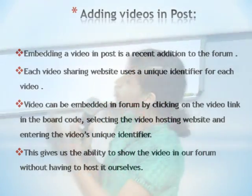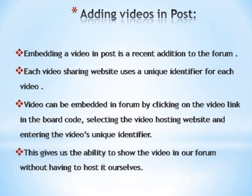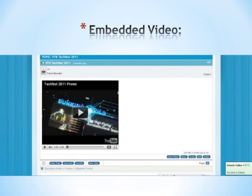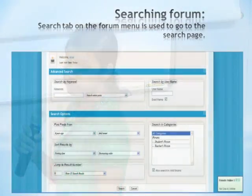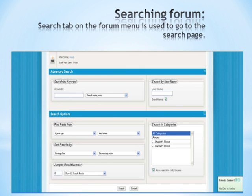We have also integrated videos and posts. You can add them without hosting it yourself — every site gives a unique identifier for each video, so you insert that identifier in the post and the video will be embedded. There is an example of an embedded YouTube video. We have also implemented search in the forum with an option of advanced search, where a student can search by keyword, username, find a post from a particular date, sort results, and jump to any result number.